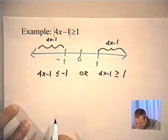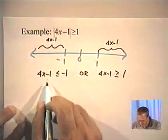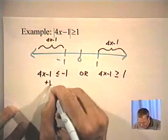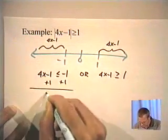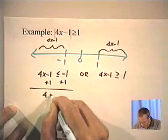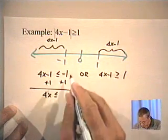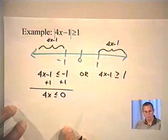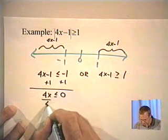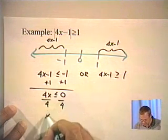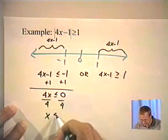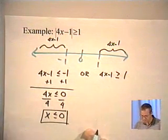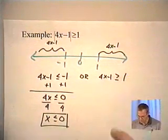To solve the left inequality, let's add 1 to both sides. We get 4x less than or equal to 0 — because negative 1 plus 1 is 0. Divide by 4, and we get x less than or equal to 0.